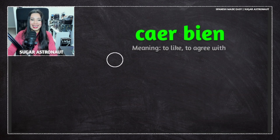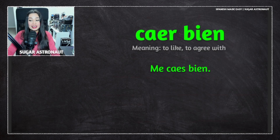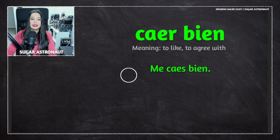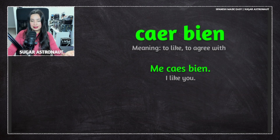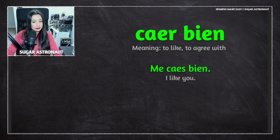The first example is 'me caes bien' — a very short, helpful, and common sentence. Me caes bien means 'I like you,' not romantically. You're just saying, 'hey, you're a cool person.'